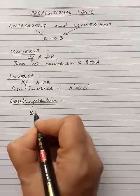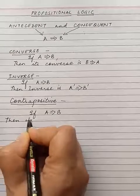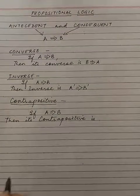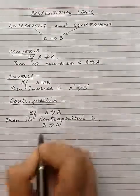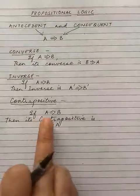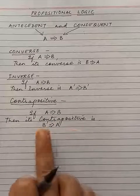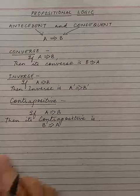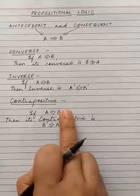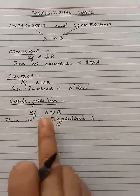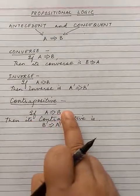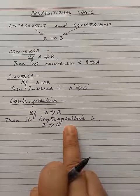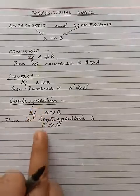Next is contrapositive. If the condition is A implies B, then its contrapositive is B-complement implies A-complement. In statement form: a new conditional statement whose antecedent on the left-hand side is the negation of the consequent, and the consequent on the right-hand side is the negation of the antecedent of the original conditional statement. This is known as the contrapositive.